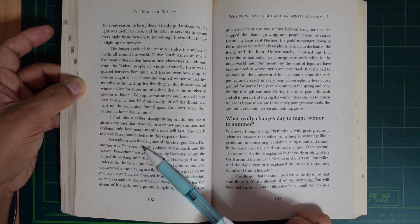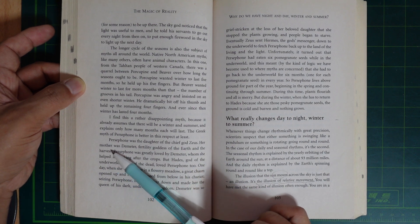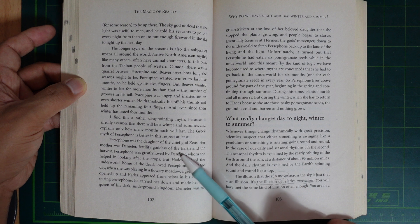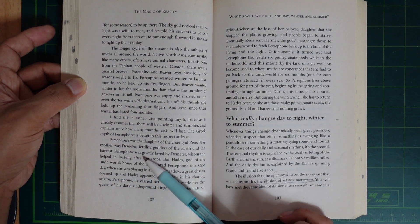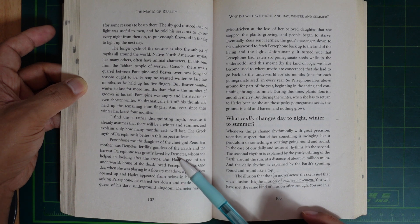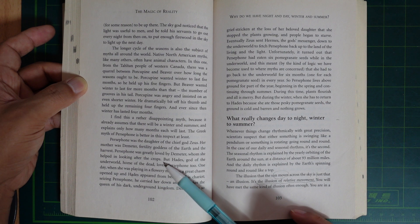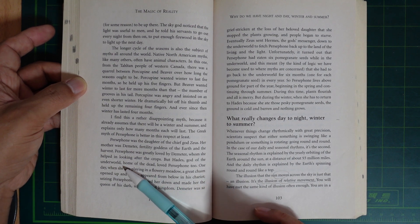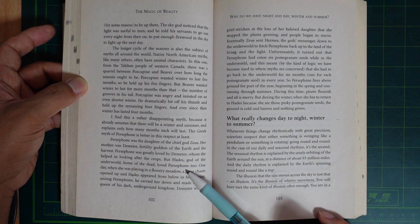Persephone was the daughter of the chief god Zeus. Her mother was Demeter, who was goddess of the harvest and helped in looking after the crops. But Hades, god of the underworld, home of the dead, loved Persephone too.